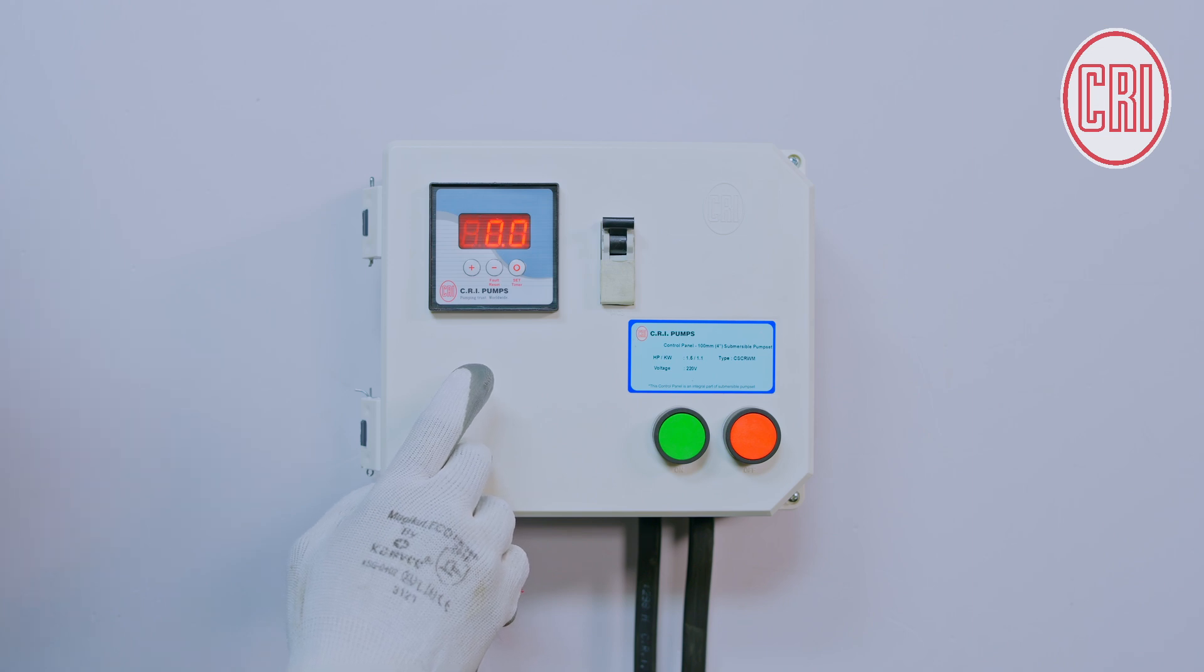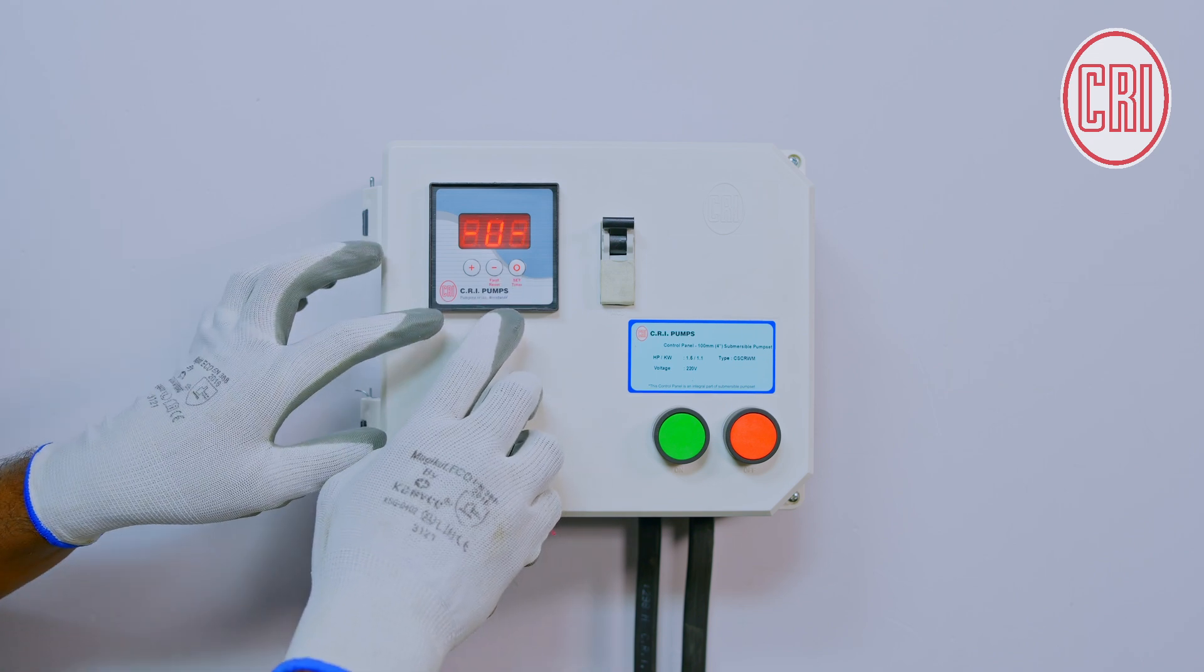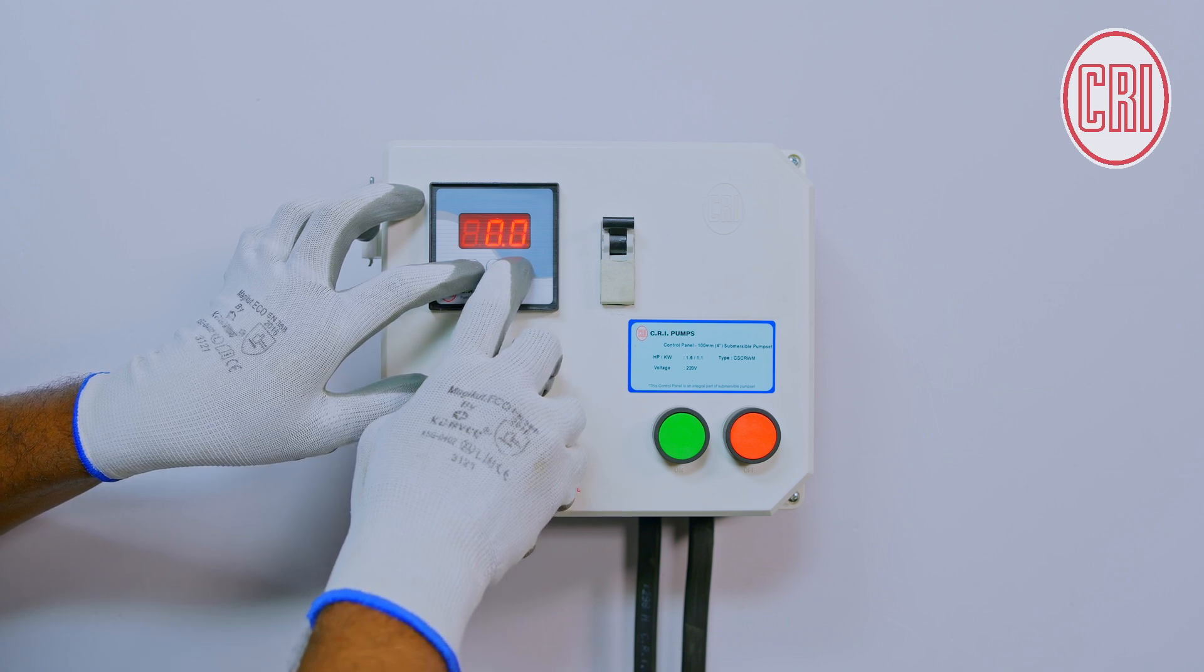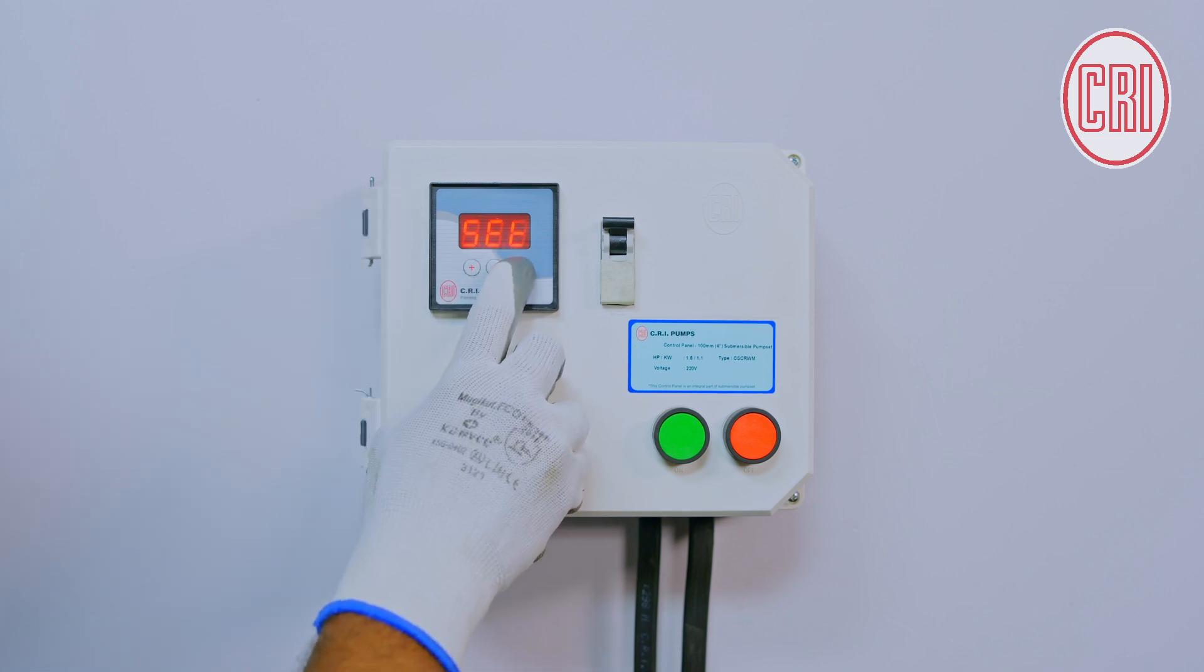The condition could be like low water level in the sump, blockage due to dust. In such conditions, the way to protect the pump is what we are going to see now. To check in the settings, we should follow the same procedure like MRC. Pressing and holding the Plus button, and simultaneously pressing the Set timer button, we will reach the Set mode.